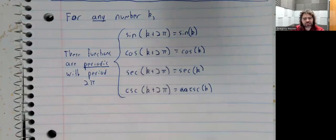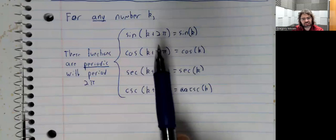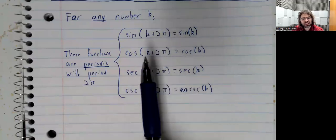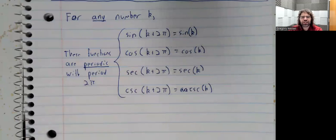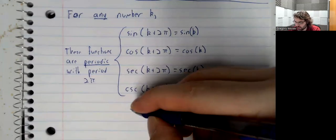Now, if you look at this list, you'll notice that we're missing some stuff. We're missing the tangent, and we're missing the cotangent. And the tangent and the cotangent have similar but not identical properties.